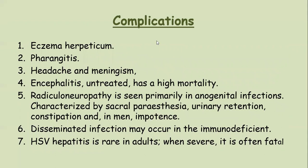Complications of herpes simplex virus include eczema herpeticum, pharyngitis, headache and meningism, encephalitis with high mortality, and radicular neuropathy seen primarily in anogenital infection, characterized by sectoral paresthesias, urinary retention, constipation and impotence. Disseminated infection may occur in immunodeficient patients, and HSV hepatitis is rare in adults but is a fatal complication.